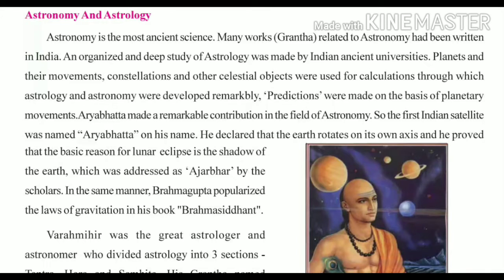Now we will talk about astronomy and astrology. Before that, we need to understand the difference between these two words, as many students mix them up. Astronomy is Khagol Vigyan — the study of stars, the sun, moon, planets, and constellations. Astrology is Jyotish Shastra — making predictions based on the positions of planets and constellations.